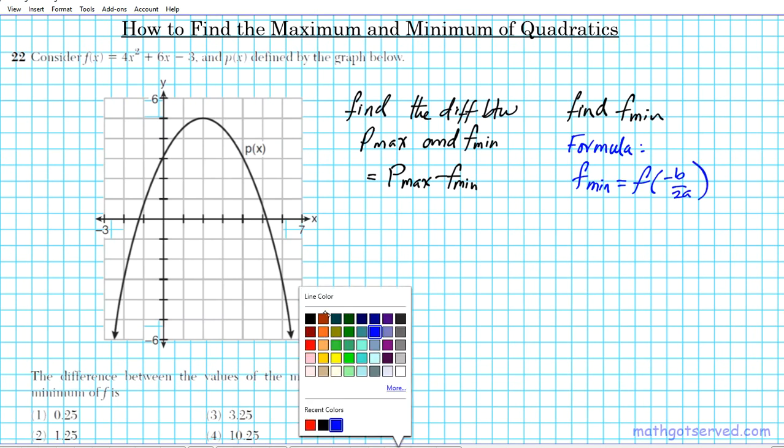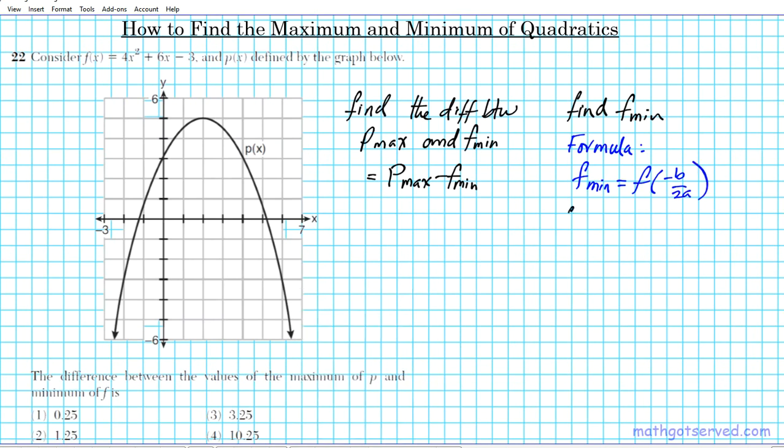All right, so let's look at the f of x function. F of x is 4x squared plus 6x minus 3. A is 4, b is 6, and c is negative 3. We don't need c for this problem, we just need a and b, which are 4 and 6.